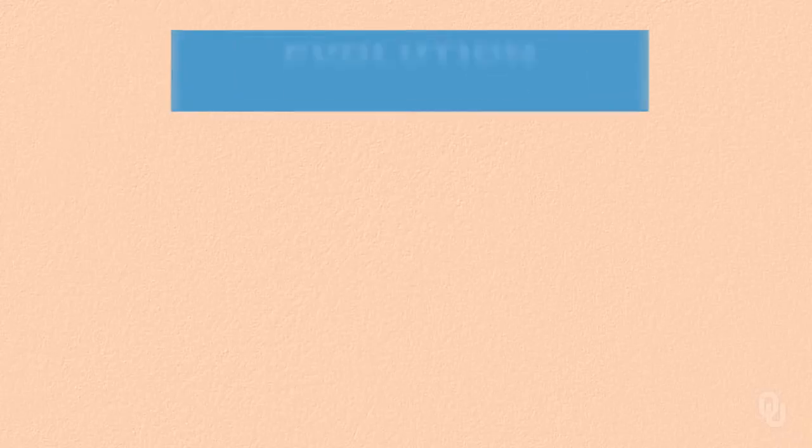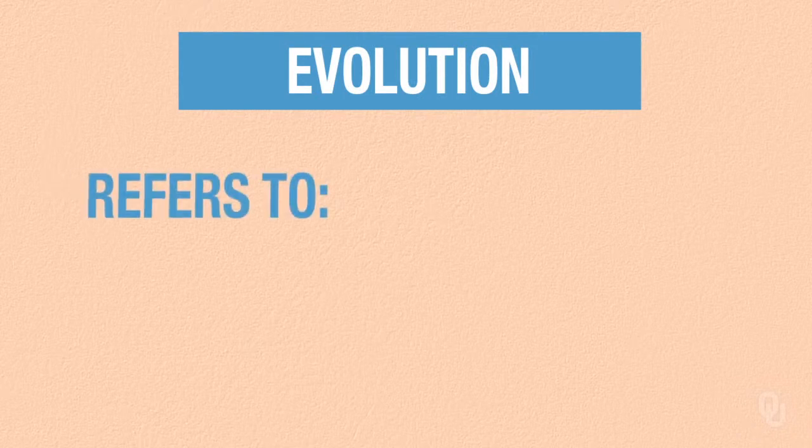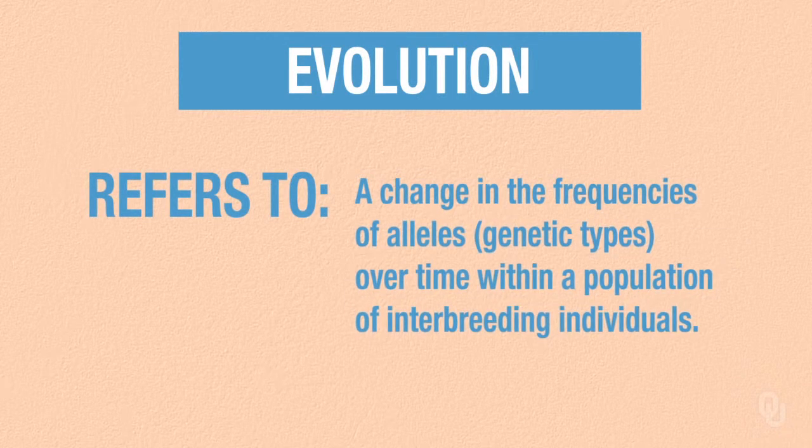We now understand much more about genetics and how traits can change within a local population over time. The study of this process is called population genetics. In population genetics, the term evolution is given a very practical definition: evolution refers to the change in the frequencies of the alleles, or genetic types, over time within a population of interbreeding individuals.